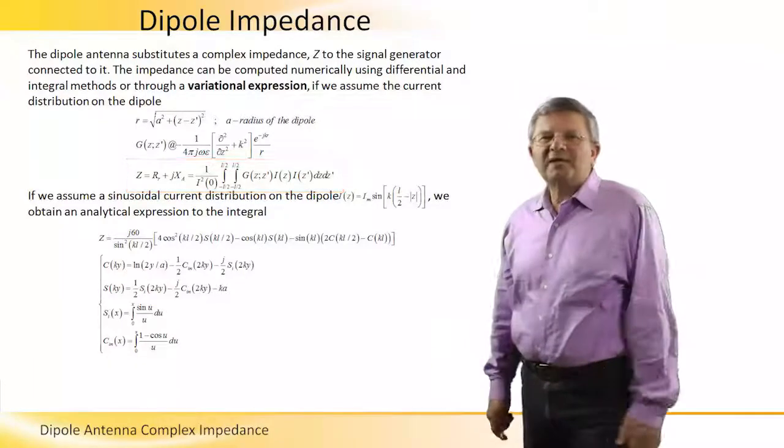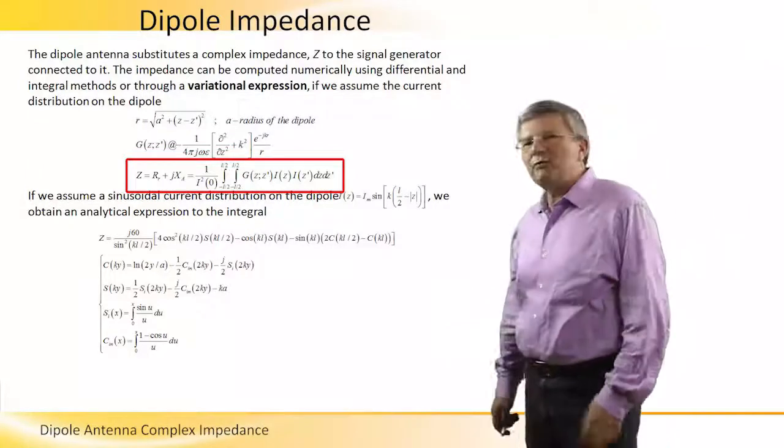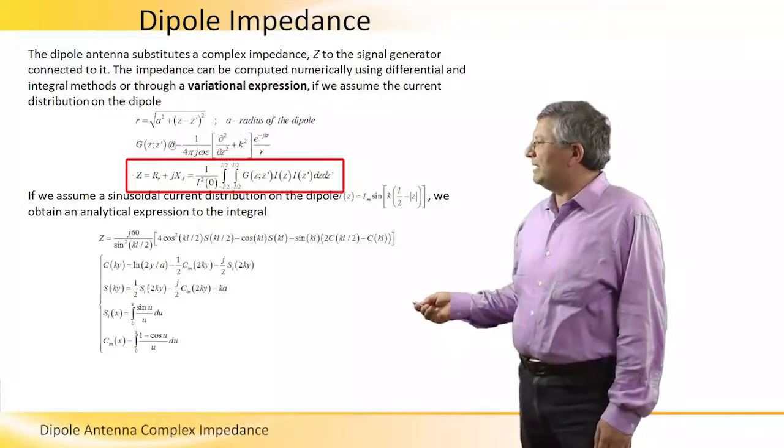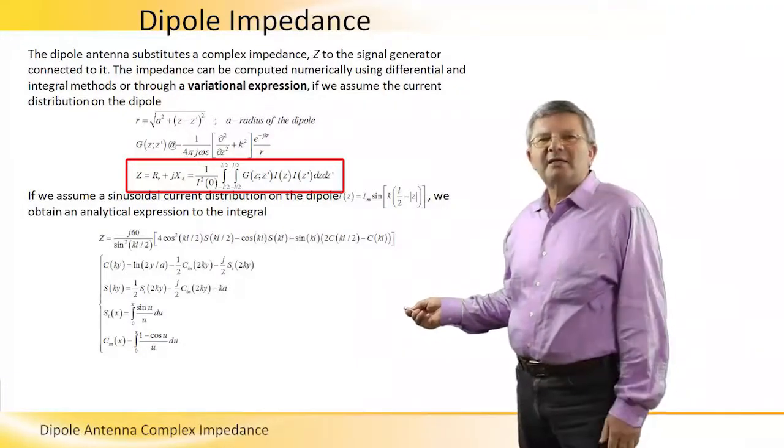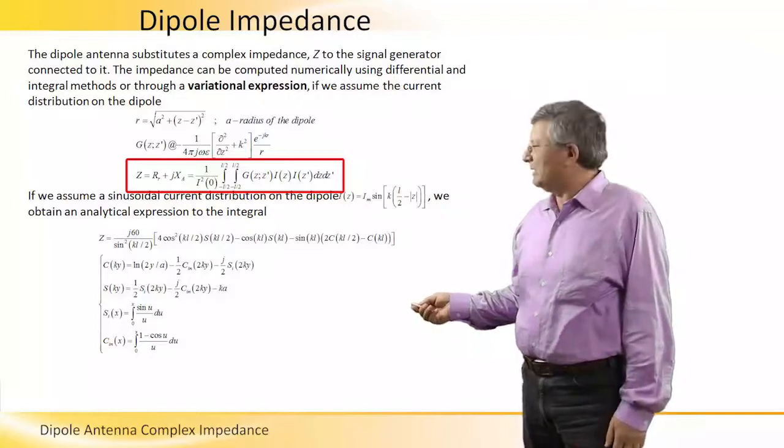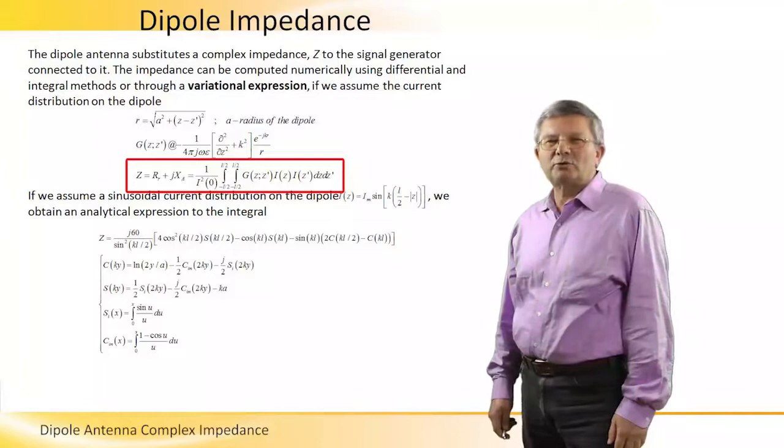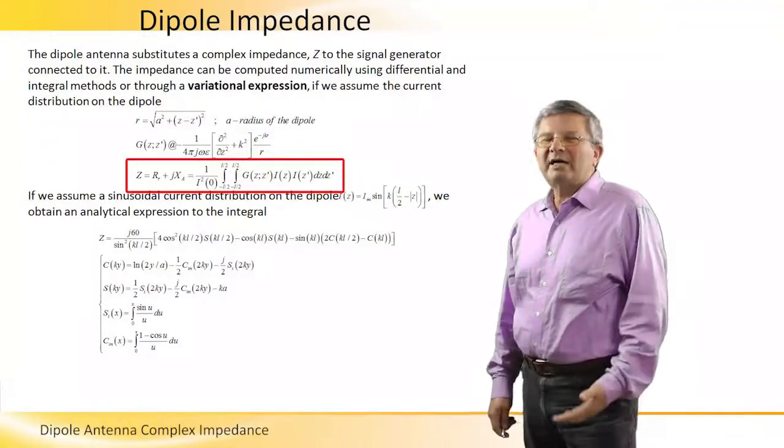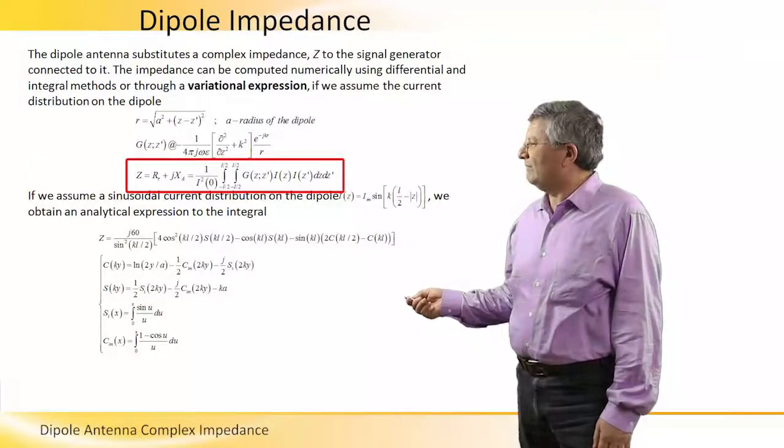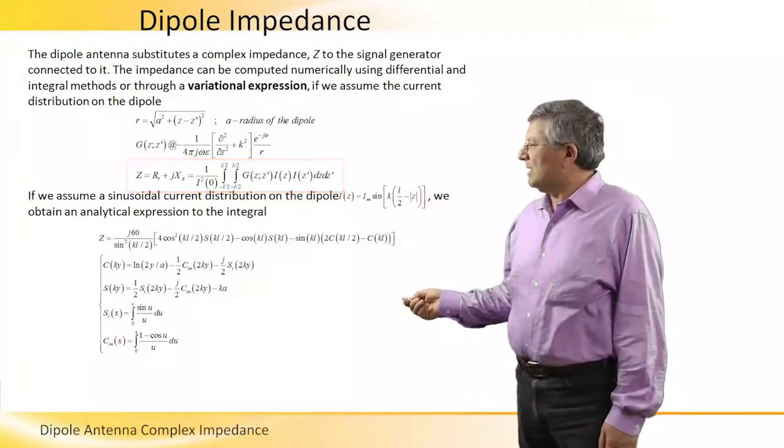What is unique in a variational expression like this is the fact that if we make a small change in i, we get a negligible change in the complex impedance. This is the beauty of this expression: we don't need to know exactly what is the current distribution. We can have an estimate of the current distribution and still get a very good approximation of the complex impedance.